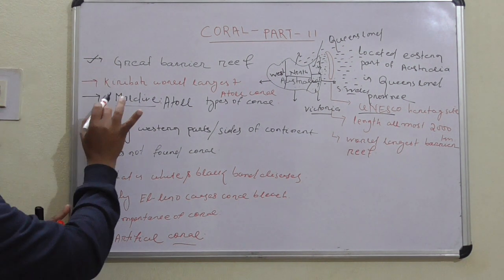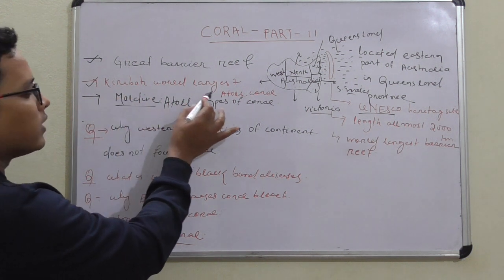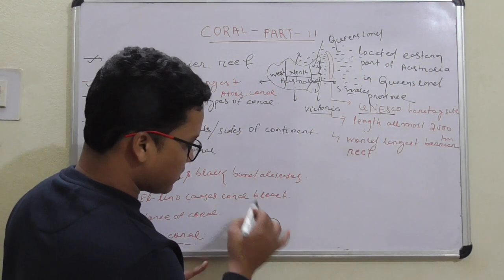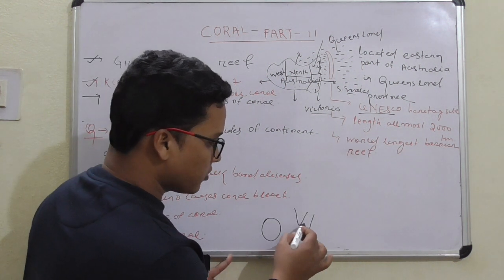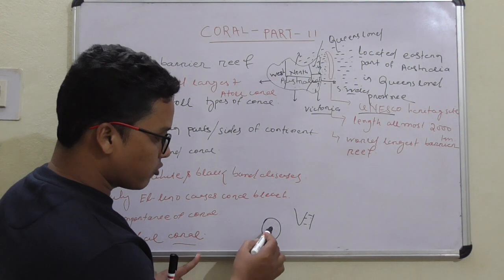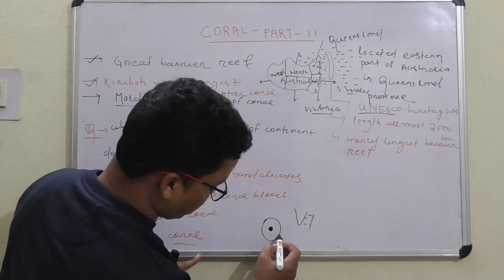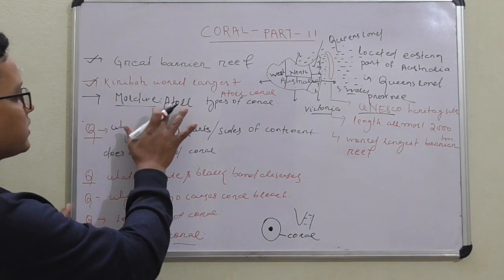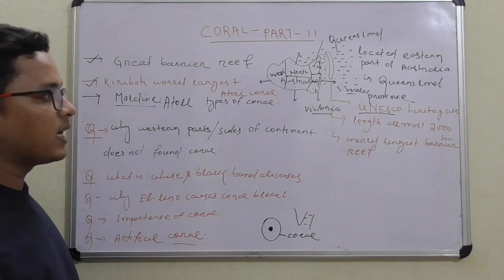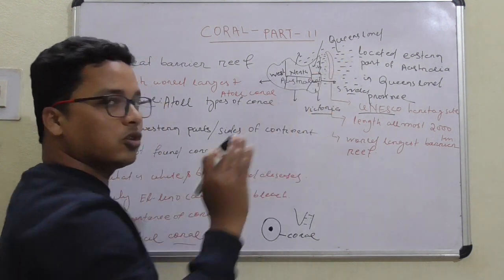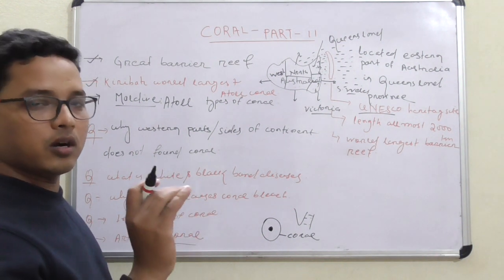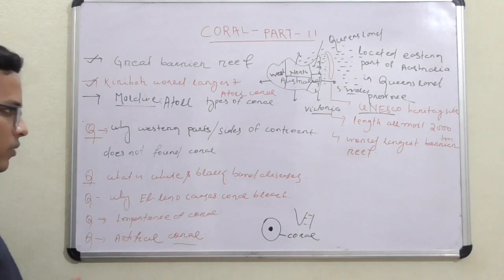Second point: Kiribati. Kiribati is the world's largest atoll coral. Atoll corals means circular — the corals are in a circular shape with land in the middle surrounded by corals. A barrier reef is away from the coast. Kiribati is not under Australia; it is a Micronesia country located in the southwestern part of the Pacific Ocean.